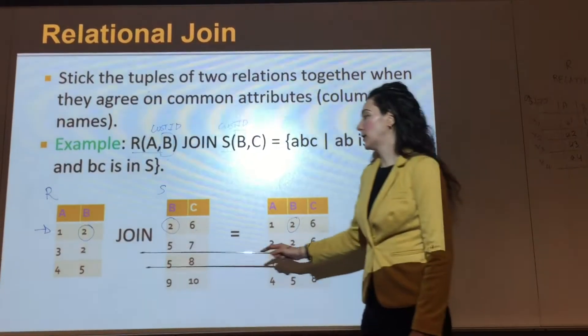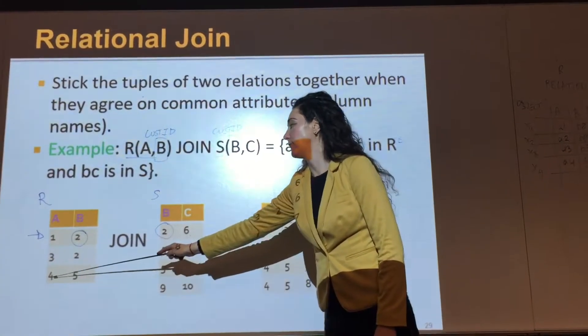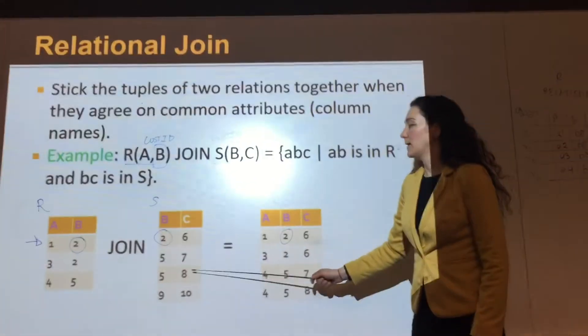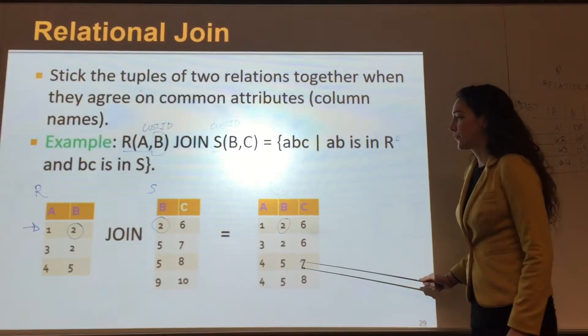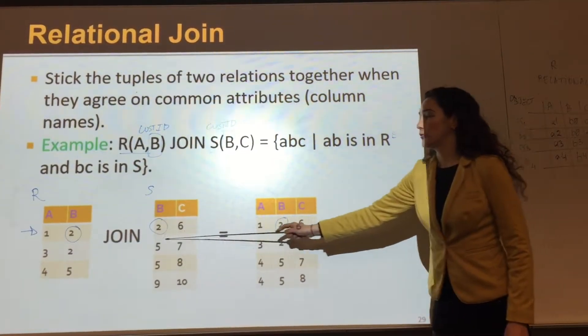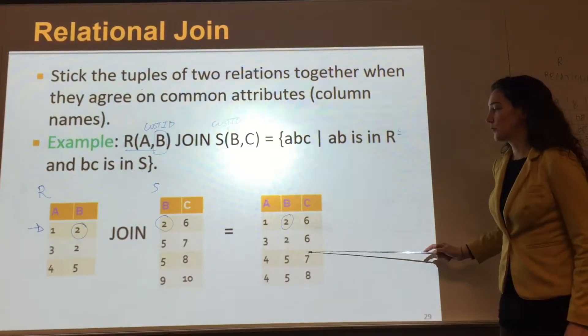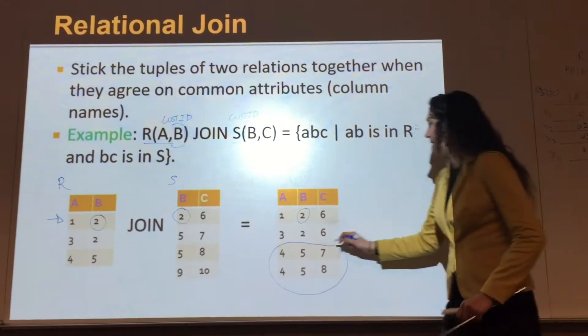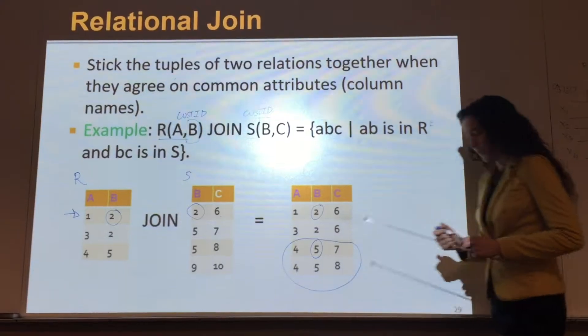For customer number five, it's going to get four for A from the first table, and eight for C from the second table. And it can get seven for C because there's two records for number five here. So you've got these two records for number five, for customer ID five.